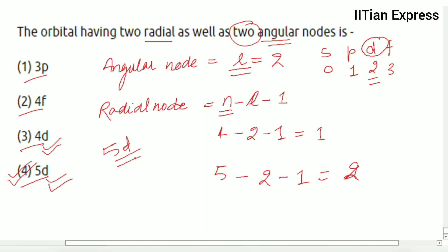So the 5d orbital having 2 radial nodes as well as 2 angular nodes. Hope you got the answer, thanks for watching and have a good day.